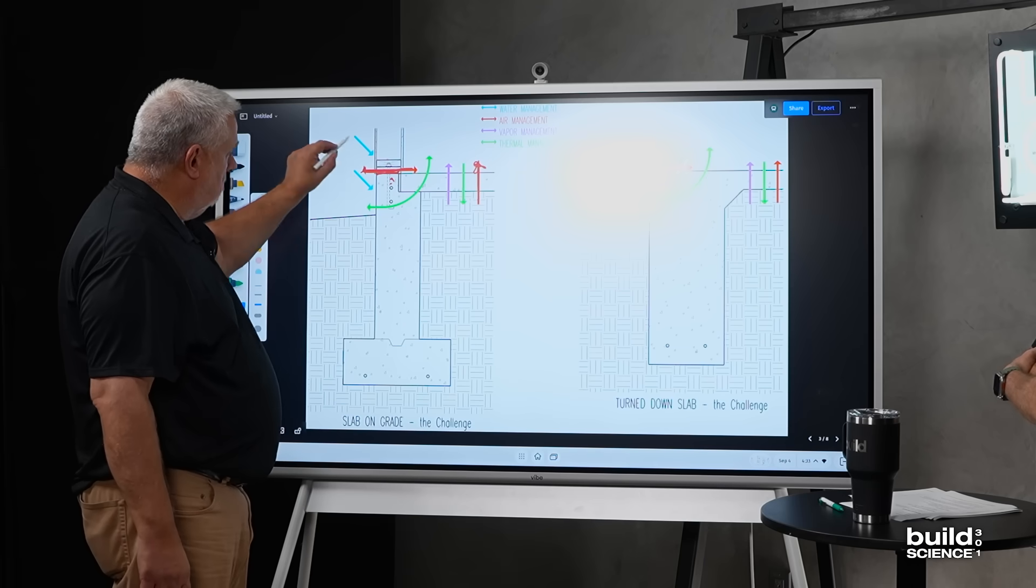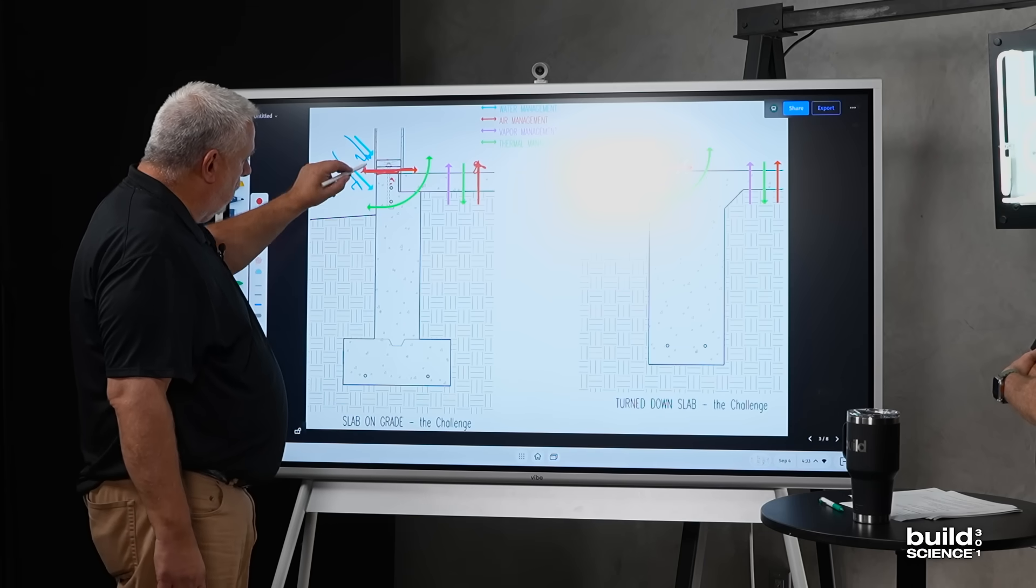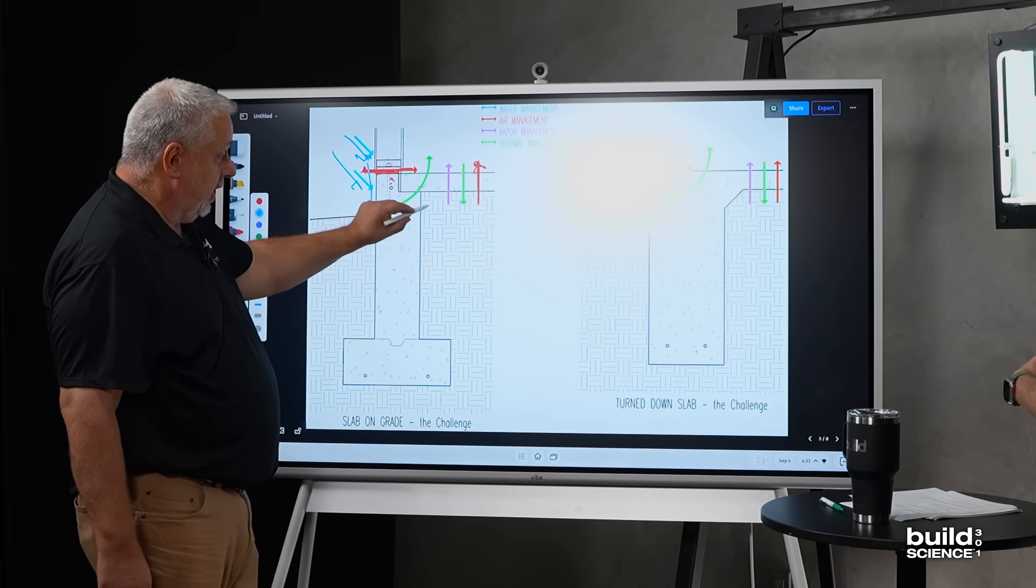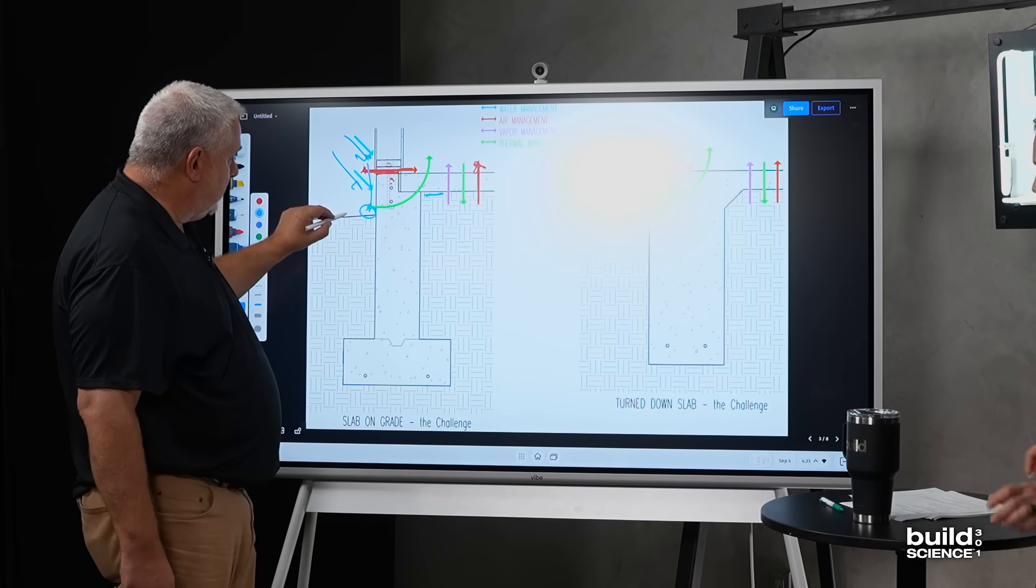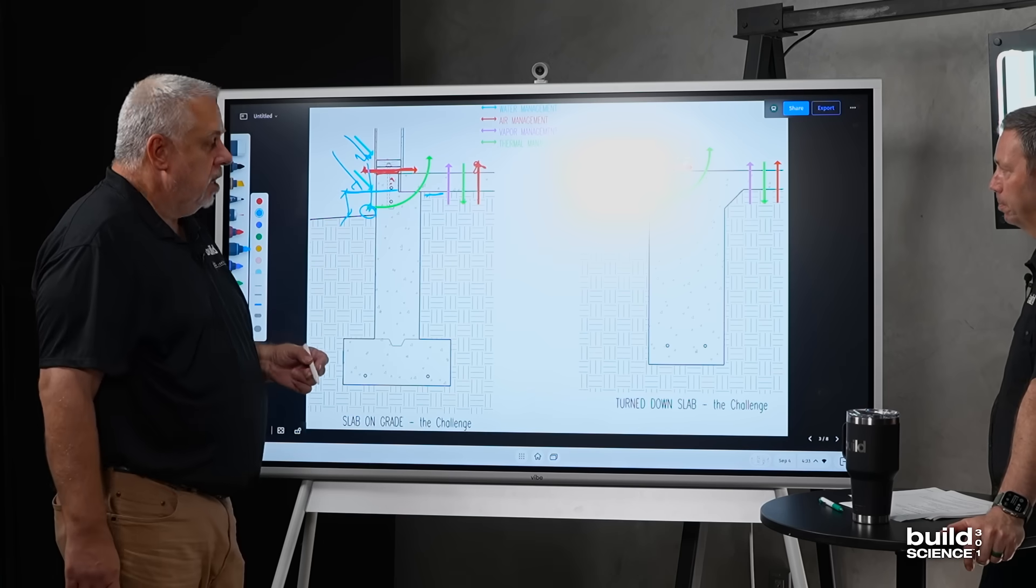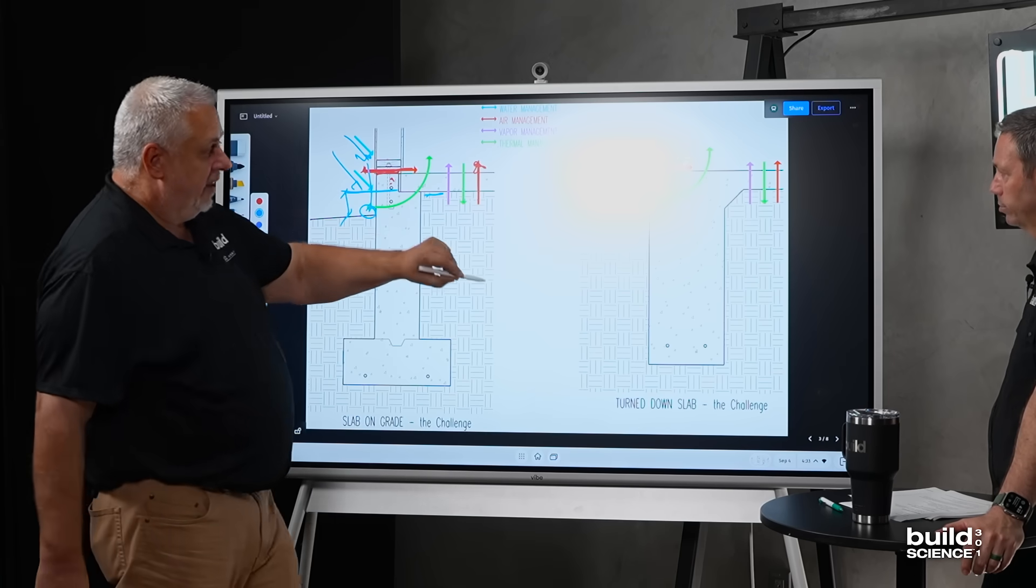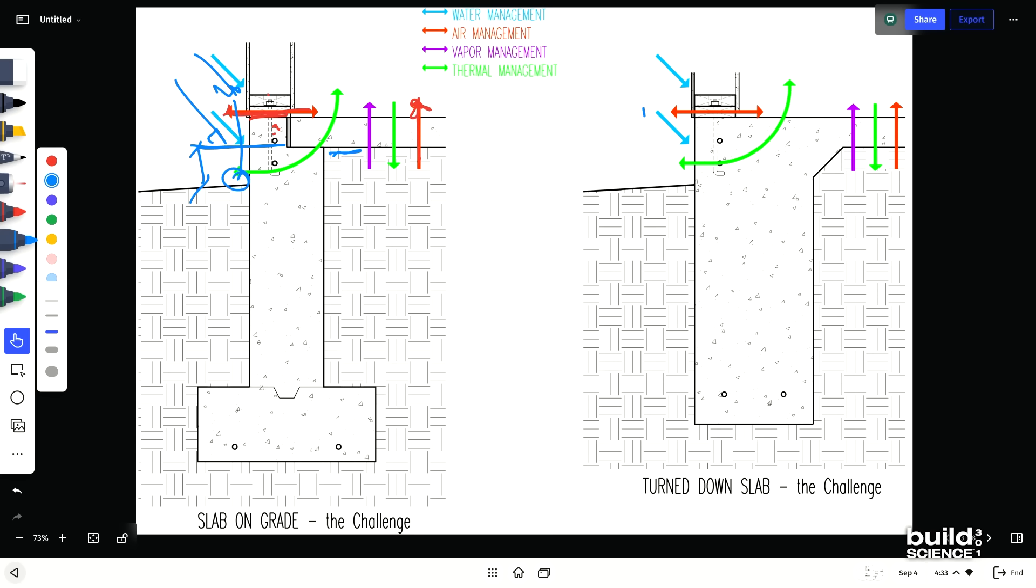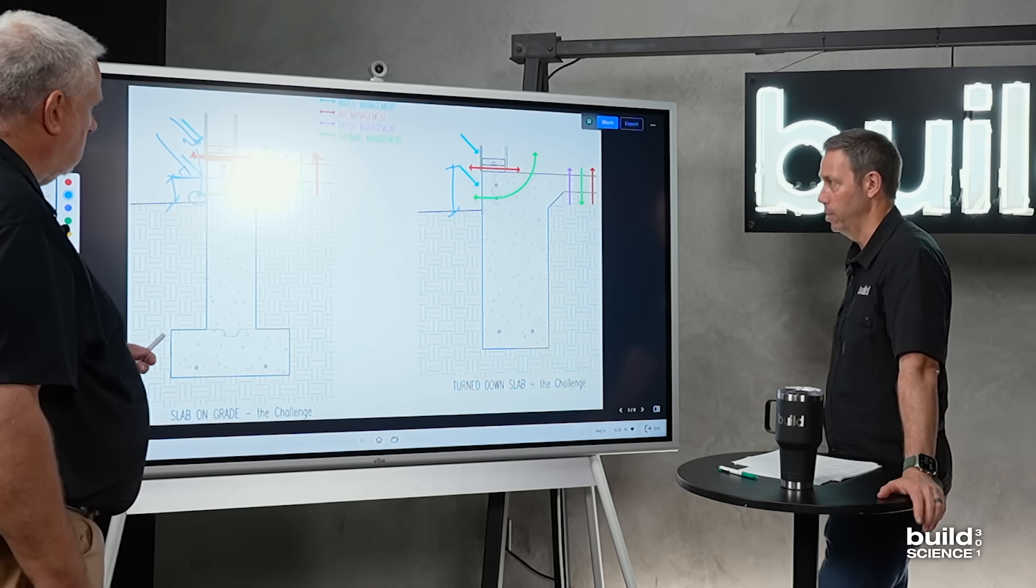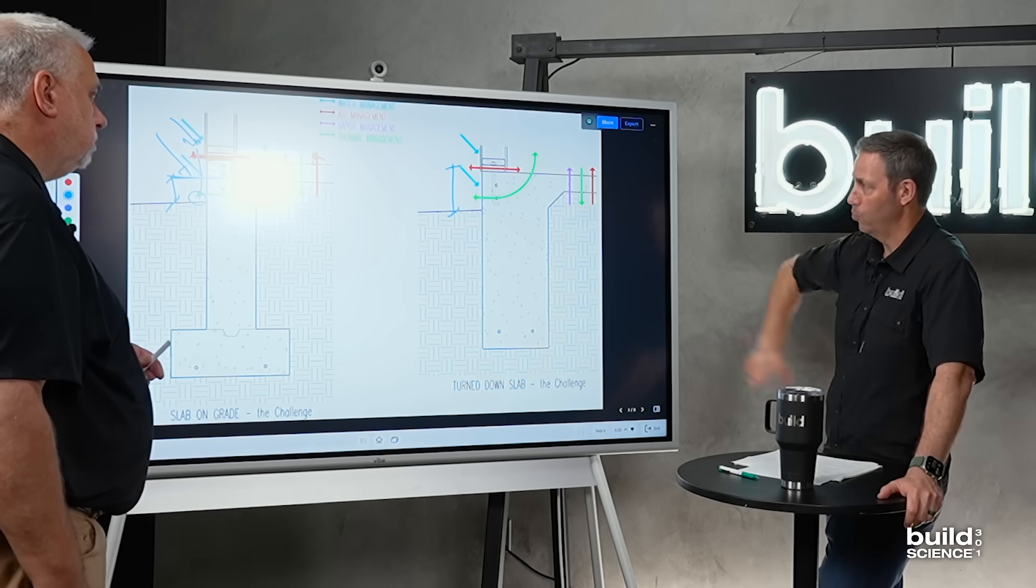So water management. Everything gets rained on. That water is going to come down and accumulate. One of the beauties of slab, I call it slab on grade. It is, in fact, on grade, but it is slightly above grade here. So the beauty of the slab on grade and the turndown slab is just by virtue of its detail or design, it has really good water management. We don't have that in-ground foundation. We're going to get to that in the next episode. But for now, we have a more forgiving assembly.